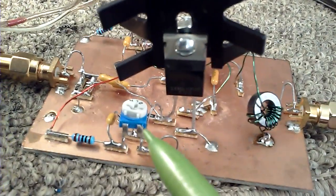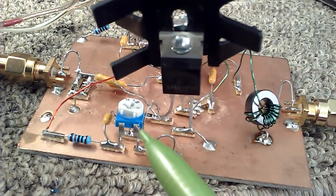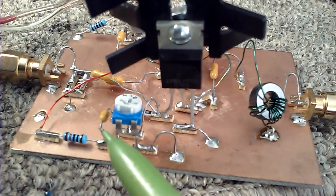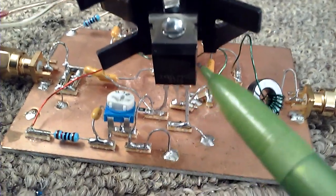I've got my bias pot set up so that I've got about 80 milliamps on idle current.